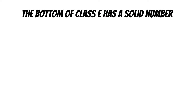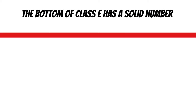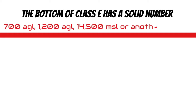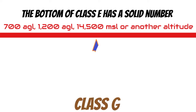So if there's one big takeaway for your written test, remember: the bottom of Class Echo has a solid number associated with it, whether that be 700 AGL, 1,200 AGL, 14,500 MSL, or another altitude. In all these cases, Class Golf starts at the surface and goes up to, but does not include, those altitudes.